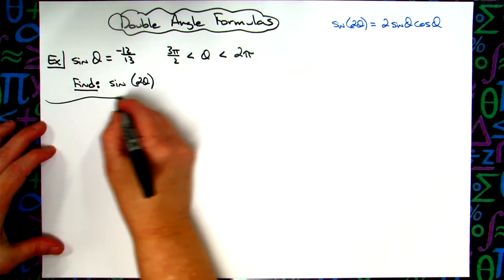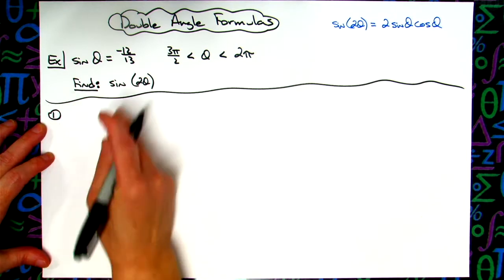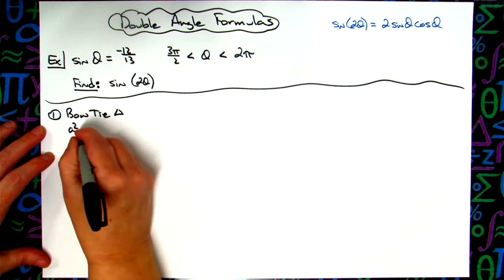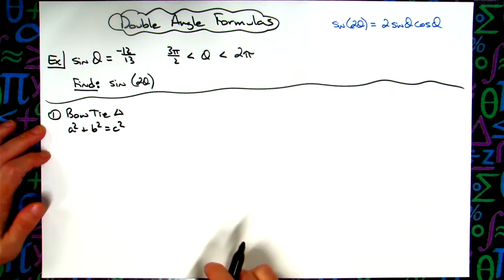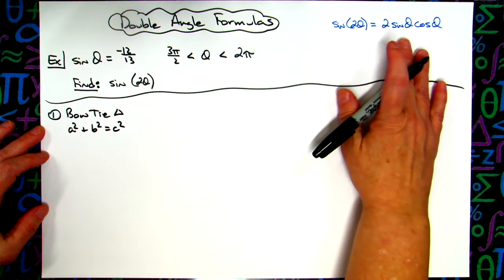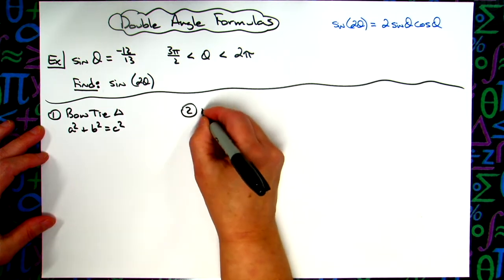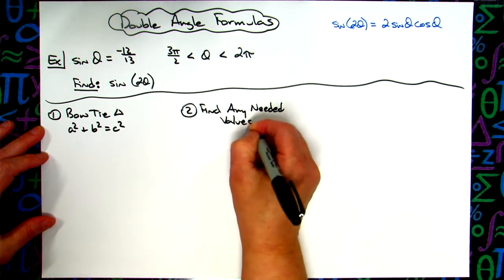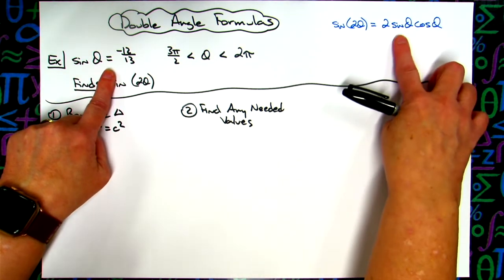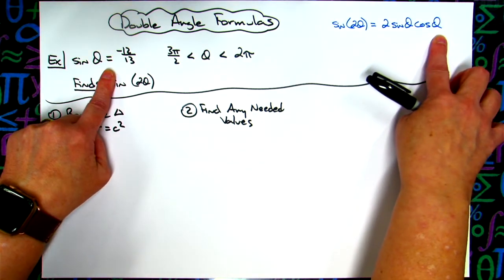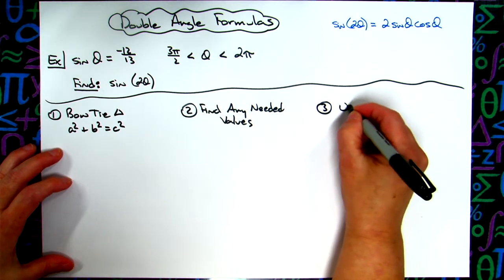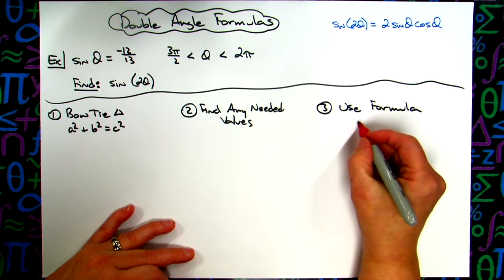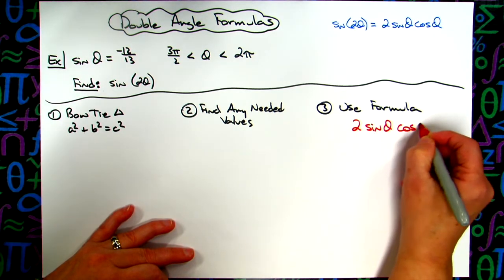Now for the most part I break this up into three steps. My first step is I take a look at everything that they give me and I draw my bowtie triangle. And then if need be I use a squared plus b squared equals c squared. I find all the missing sides of that bowtie triangle so then I can find the missing parts or whatever I need to be able to complete this formula. Step 2 then would be to find any needed values that I don't already have. In other words they've already given me the sine value which is right there. I only need to find cosine. So I would in this step be finding cosine. And then step 3 would be to just use the formula. Since they're asking for sine of 2 theta there's only one formula, I would be using the 2 times sine of theta times cosine theta.